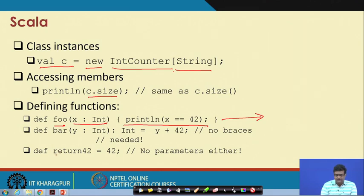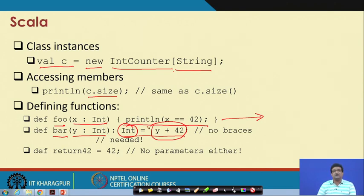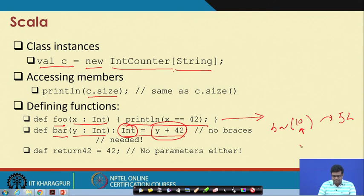The second definition is without braces. Here, bar is the function name, y is the argument, and this is the return type. You are saying the function bar takes in an integer and returns another integer, and the return value is y + 42. So whenever you call bar and pass a certain argument, it will return that value plus 42 — for example, if you pass 10 it will return 52.